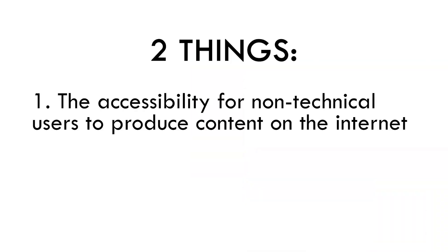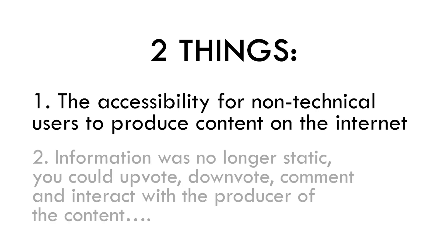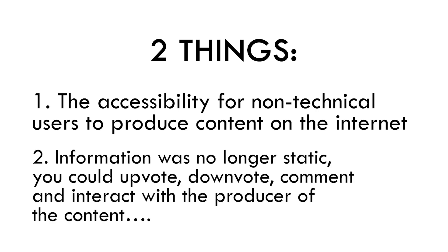The biggest shift in this era versus Web 1.0 was two things. Number one, the accessibility for non-technical users to produce content on the internet. And number two, information was no longer static — you could upvote, downvote, comment, and interact with the producer of the content. And we really take this for granted today.